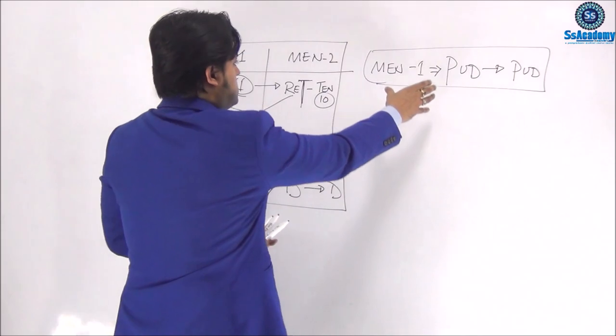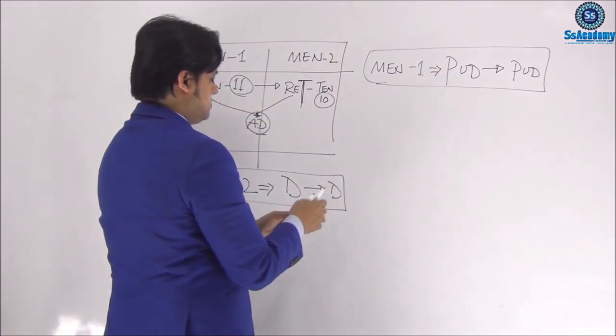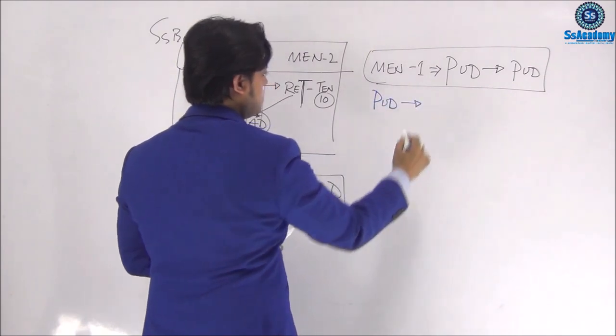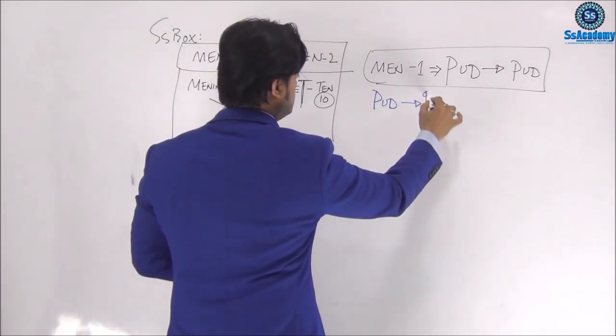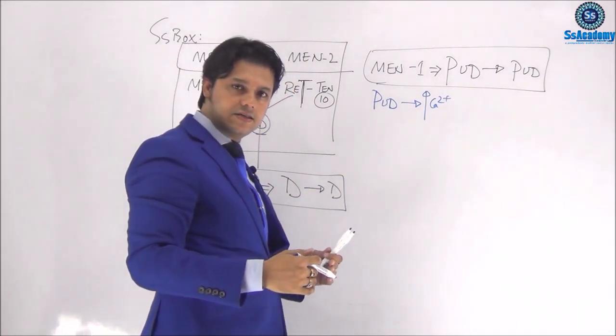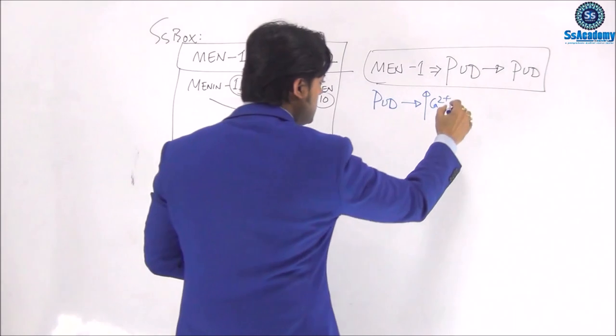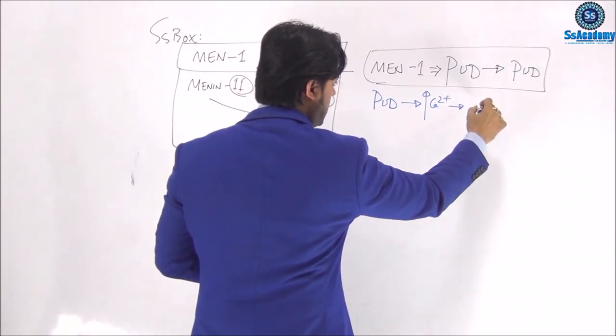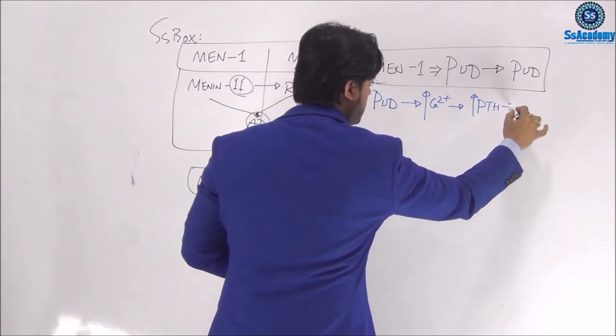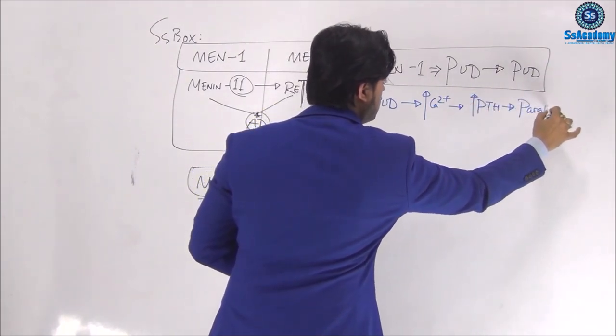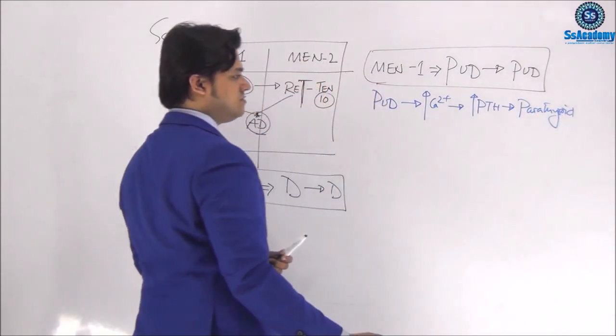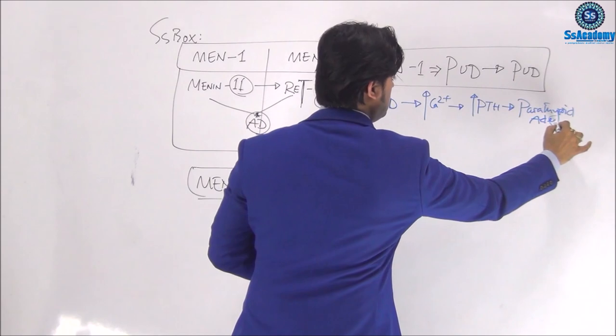Let's talk about it. So MEN-1, yes, the first putie, the first putie is due to hypercalcemia. We already talked about the hypercalcemia is the cause of peptic acid disease. And this hypercalcemia is caused by primary hyperparathyroidism due to parathyroid adenoma. We can write parathyroid adenoma.